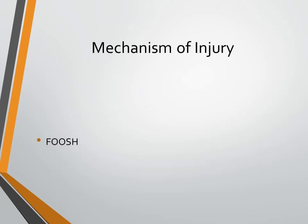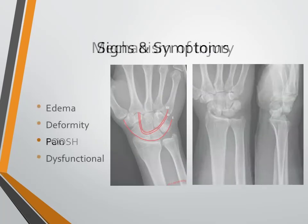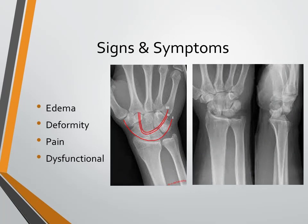The mechanism of injury is a FOOSH with wrist hyperextension. There will be generalized wrist swelling, deformity that is often confused with a distal radial fracture, intense pain, and the individual will be dysfunctional.